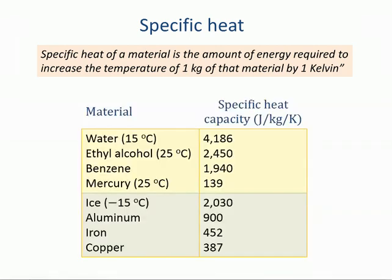Here is a table of specific heat capacities for notable materials. You can immediately see that water ranks among the highest, with more than 4000 joules per kilogram per Kelvin.